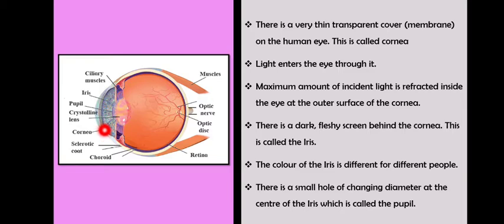Light enters the eye through the cornea. The maximum amount of incident light is refracted inside the eye at the outer surface of the cornea.